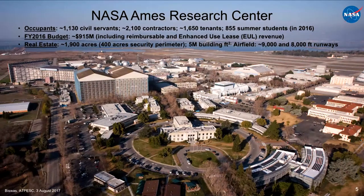Looking at my center, Ames Research Center near San Francisco in the Bay Area — the second NASA center — we have about 3,000 employees. About a third are civil servants and about 2,000 are on-site contractors. Our budget is slightly above $900 million a year. We have 2,000 acres of prime real estate in the Bay Area, a lot of which is used for collaboration with other like-minded technology companies that advance NASA's goals.